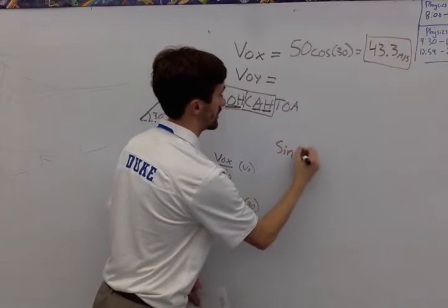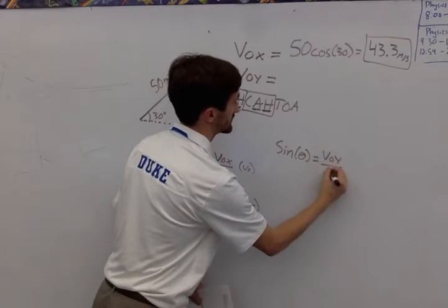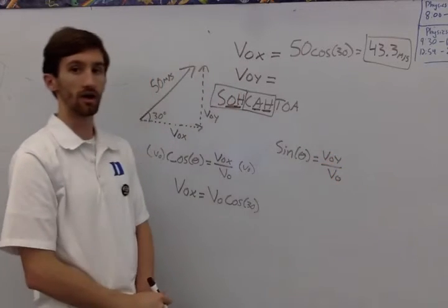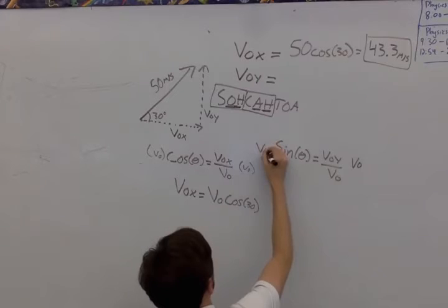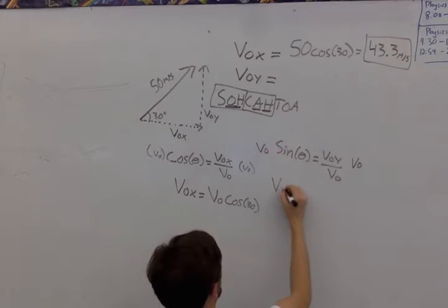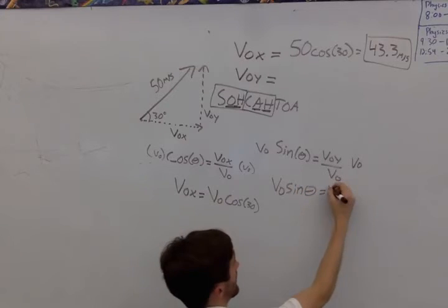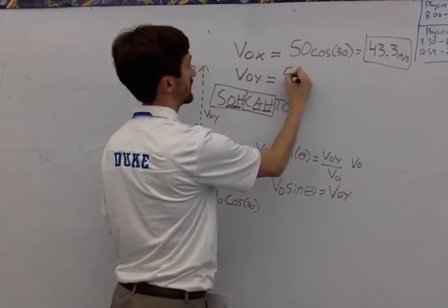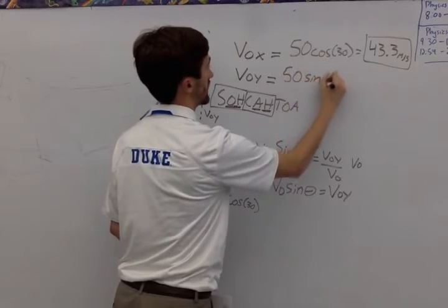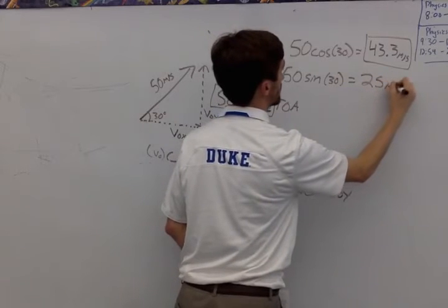So the sine of my angle is equal to the opposite over the hypotenuse. I multiply both sides by v-naught, and I get that the total velocity multiplied by the sine of the angle is equal to the y component of the velocity. So 50 sine of the angle equals 25 meters per second.